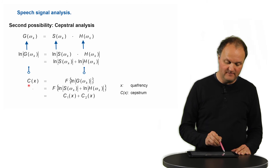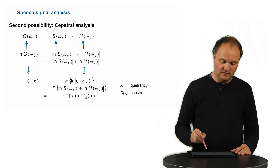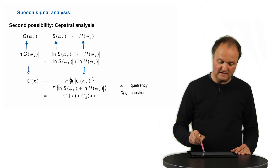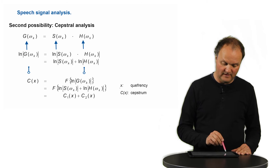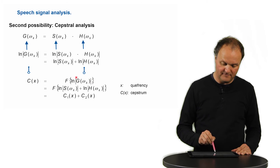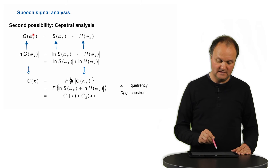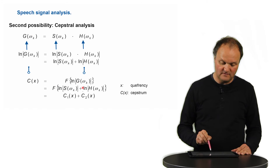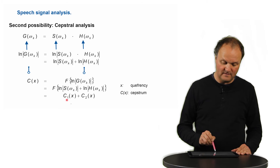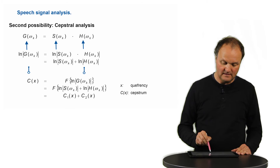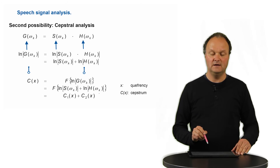Actually, we are not really in the time domain because we have calculated this logarithm before. But from a unit point of view, this value corresponds to time — it is actually called the quefrency of the signal. This quefrency is then calculated as another Fourier transform of the logarithm of the absolute value of the speech signal, which can be decomposed into these two logarithms. And as the Fourier transform is a linear operation, we can decompose that into two additive parts,